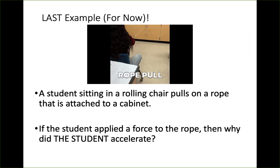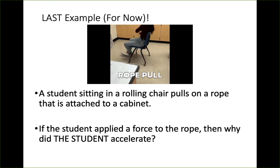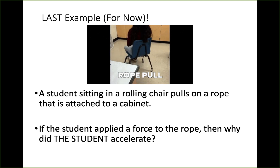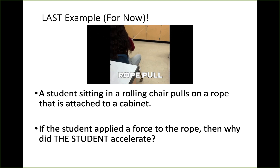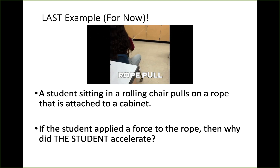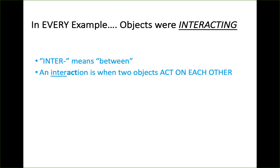And one more: we have a student pulling on a rope while sitting in a rolling chair. The student is applying a pull — a force — to the rope, but the student is accelerating. Why did the student accelerate if the student is pulling on the rope? In every example we just looked at, objects were interacting.